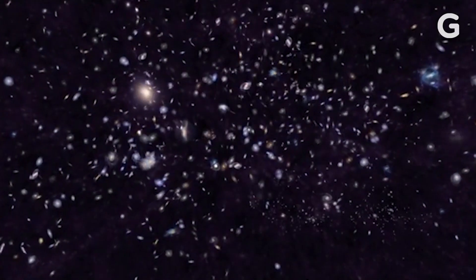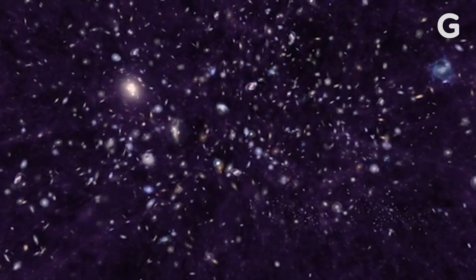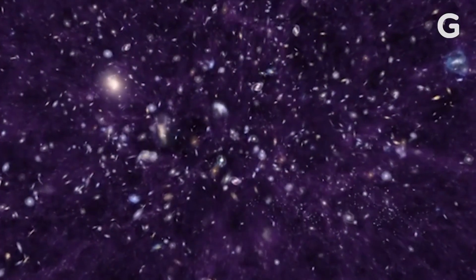Galaxy clusters are basically the biggest thing in the universe. The three major parts of a galaxy cluster are dark matter, which actually makes up most of the mass, but it's invisible, so we can't see it.